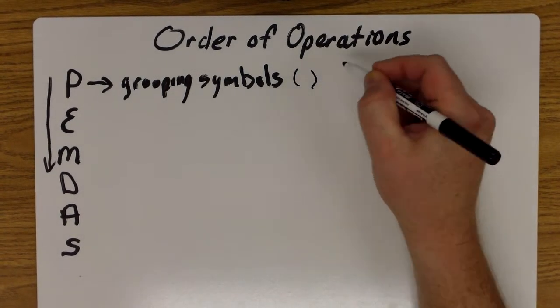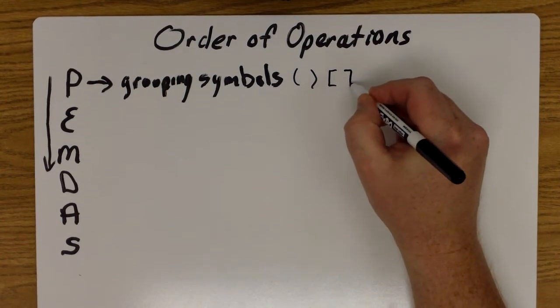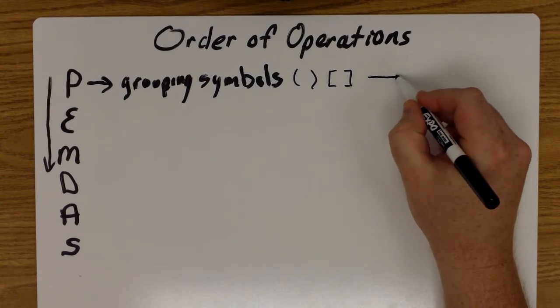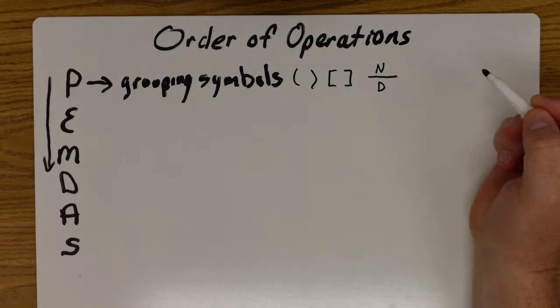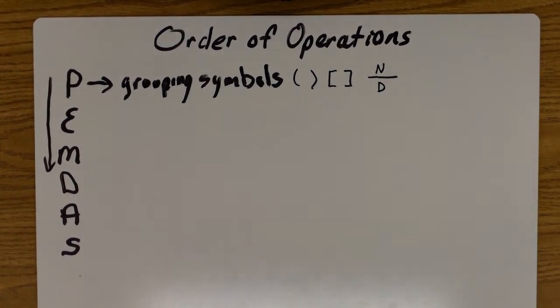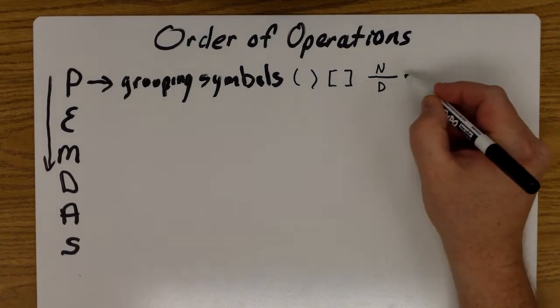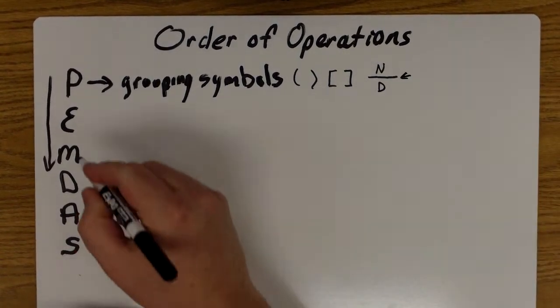be parentheses, it could be brackets, and one thing that a lot of people don't realize is if you have a fraction, the numerator and the denominator have to be treated like separate grouping symbols as well, where you do everything in the numerator and then you do everything in the denominator before you do the division bar in between.